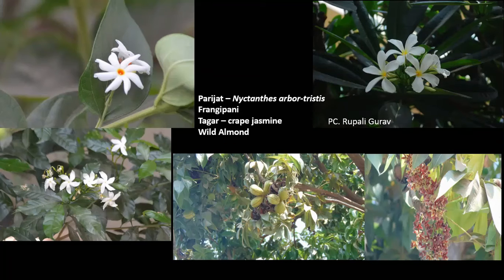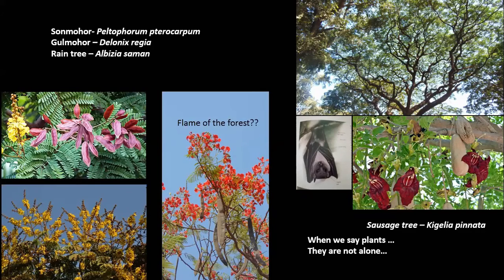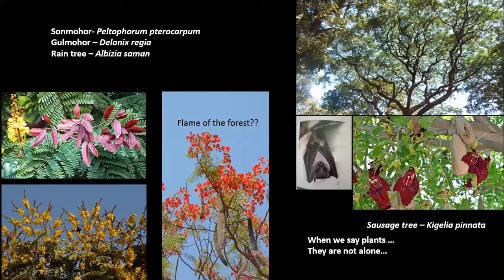We are all very familiar with these three trees. This is Delonix regia — the gulmohar, which everyone knows. Some people refer to it as flame of the forest, but in an Indian context this is not the original flame of the forest as it is not an Indian tree. This one looks like a gulmohar but has yellow flowers like gold — so it becomes the son moher: 'sonne jaisa phool, to son moher.' Then we have the rain tree, which occupies a major portion of our city.